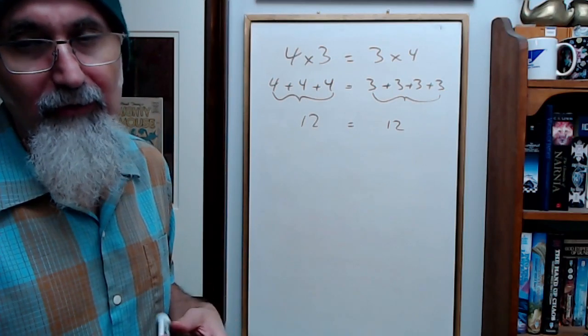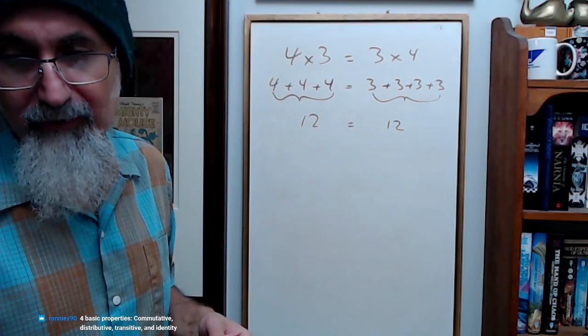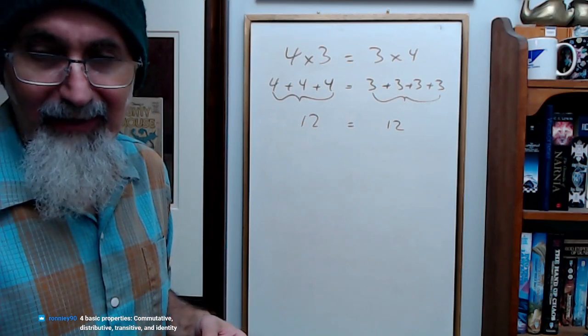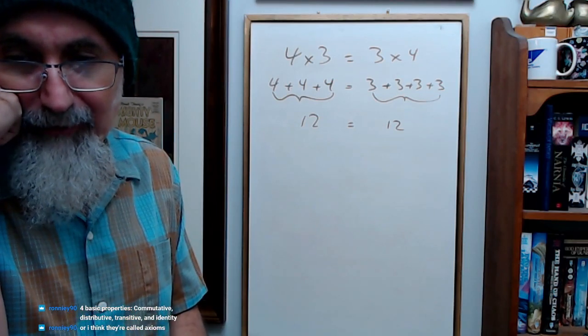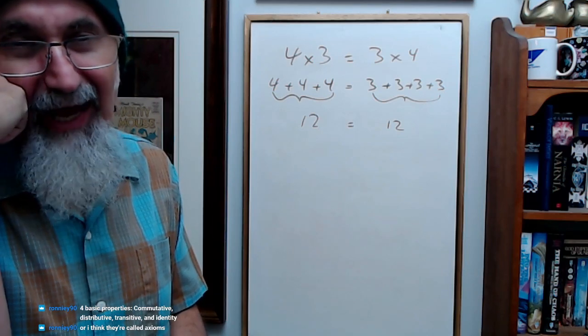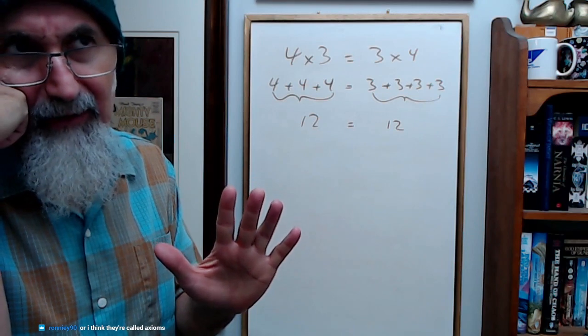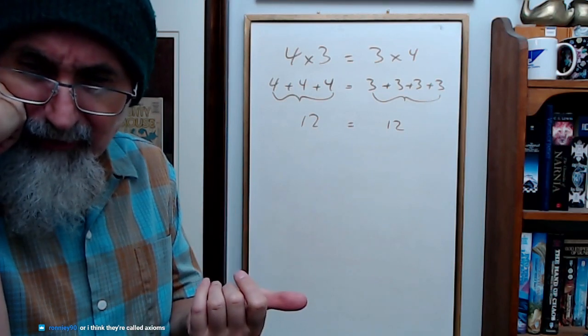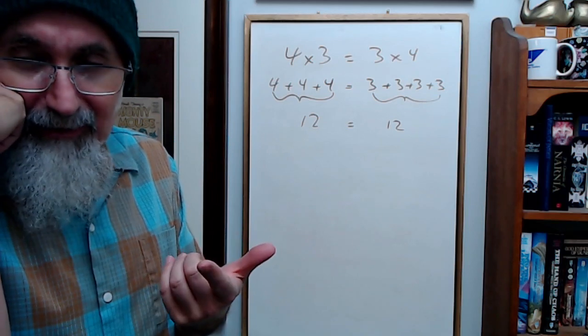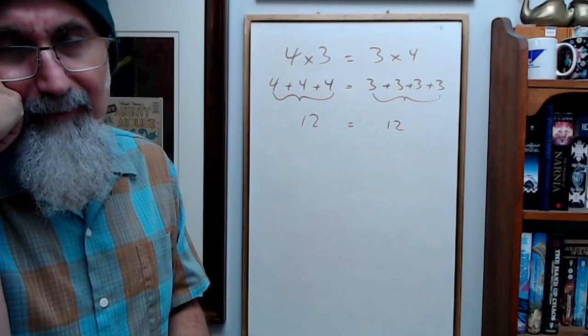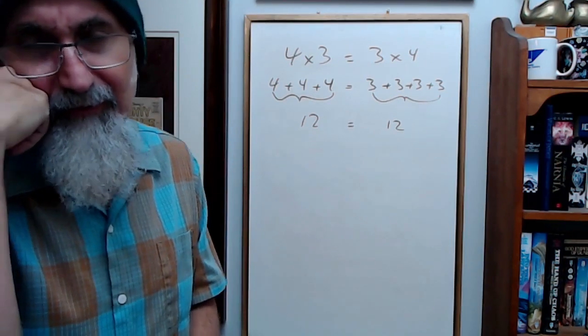For basic properties—commutative, distributive, transitive, and identity—I think they're called axioms. Yeah, the axioms of math. There's actually five axioms of mathematics. One of them is commutative, distributive... I don't know what the fifth one is. I think mathematics is based on five axioms; I can't remember what the fifth one is.